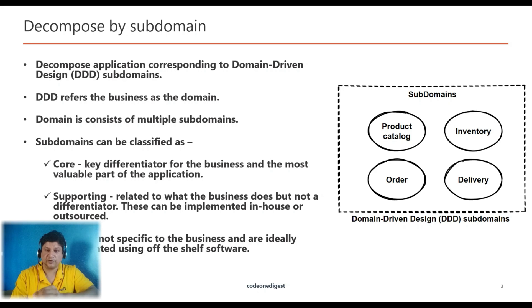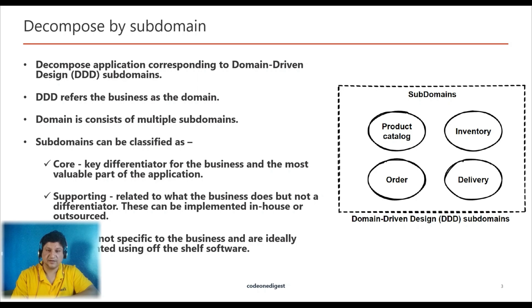In DDD, the business is referred to as a domain, and a domain consists of multiple subdomains. Each subdomain corresponds to a different part of your business. Subdomains can be classified as: a core subdomain, which is a key differentiator for your business and the most valuable part of your application; and a supporting subdomain, which is related to what the business does but is not a differentiator.